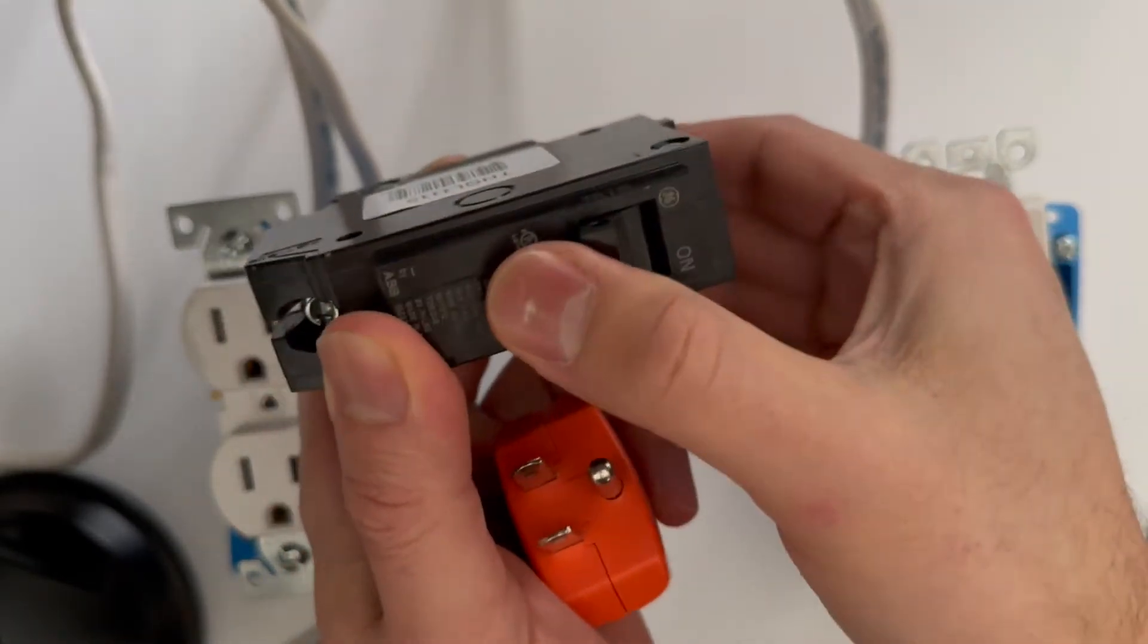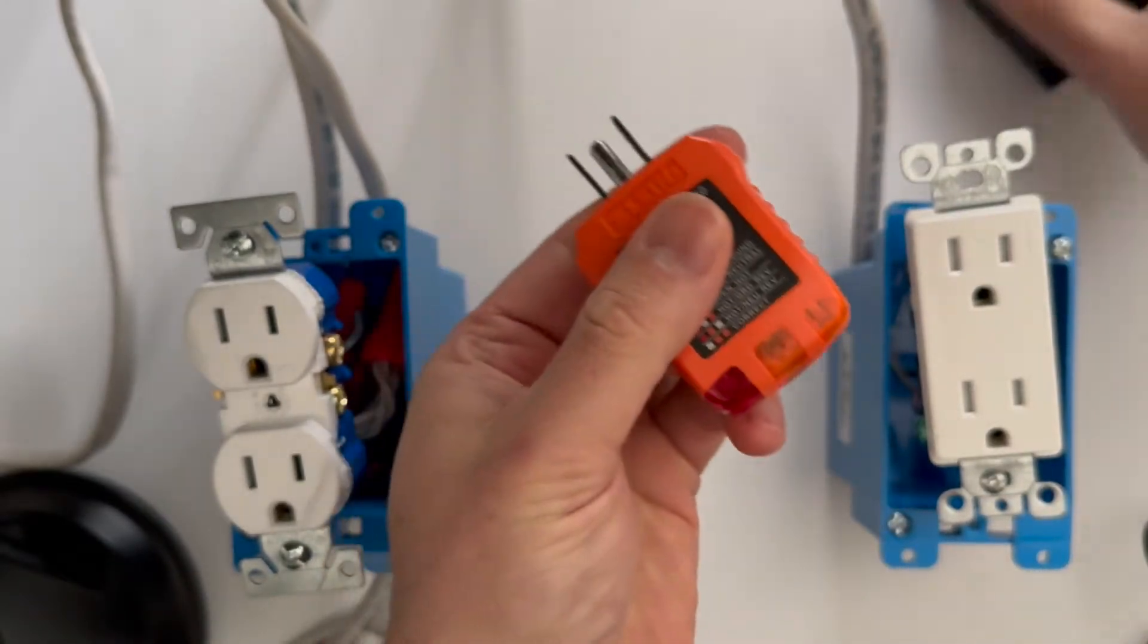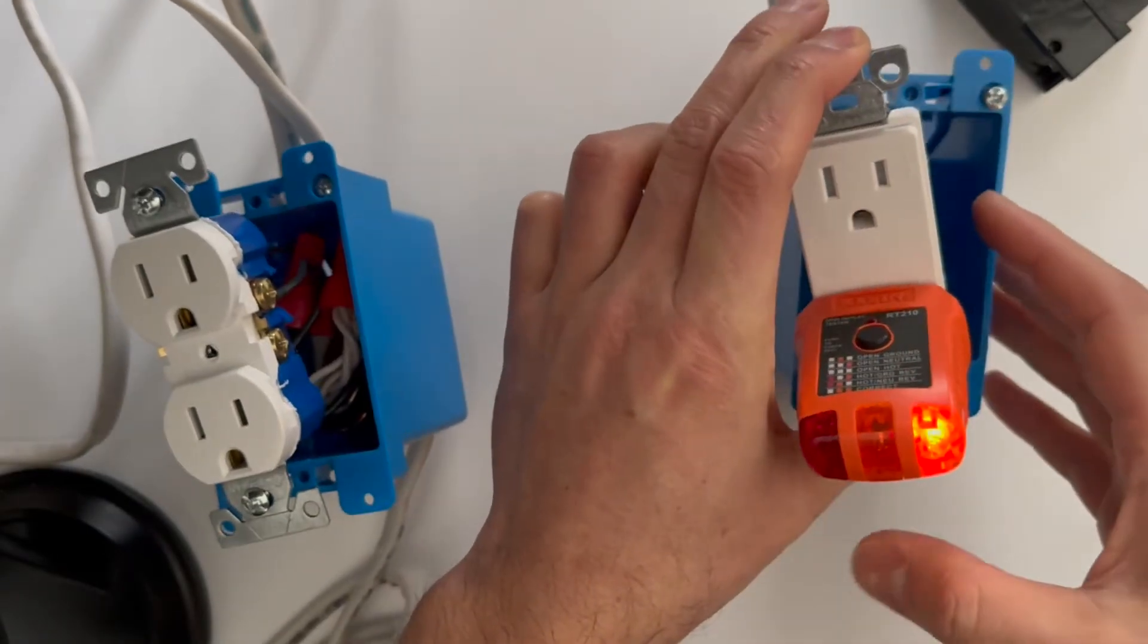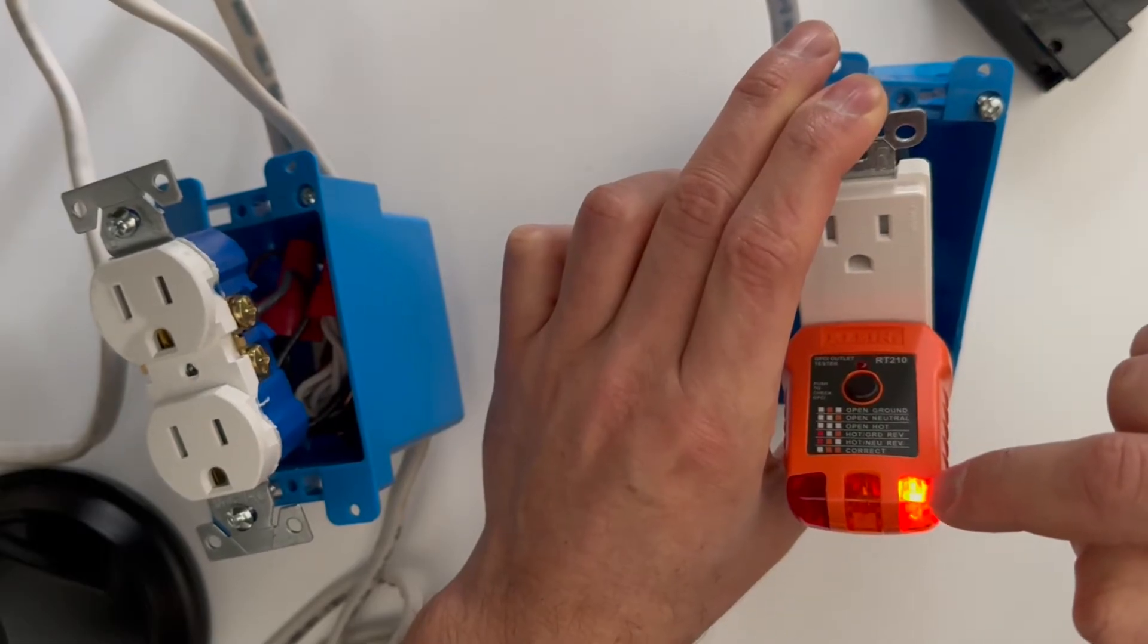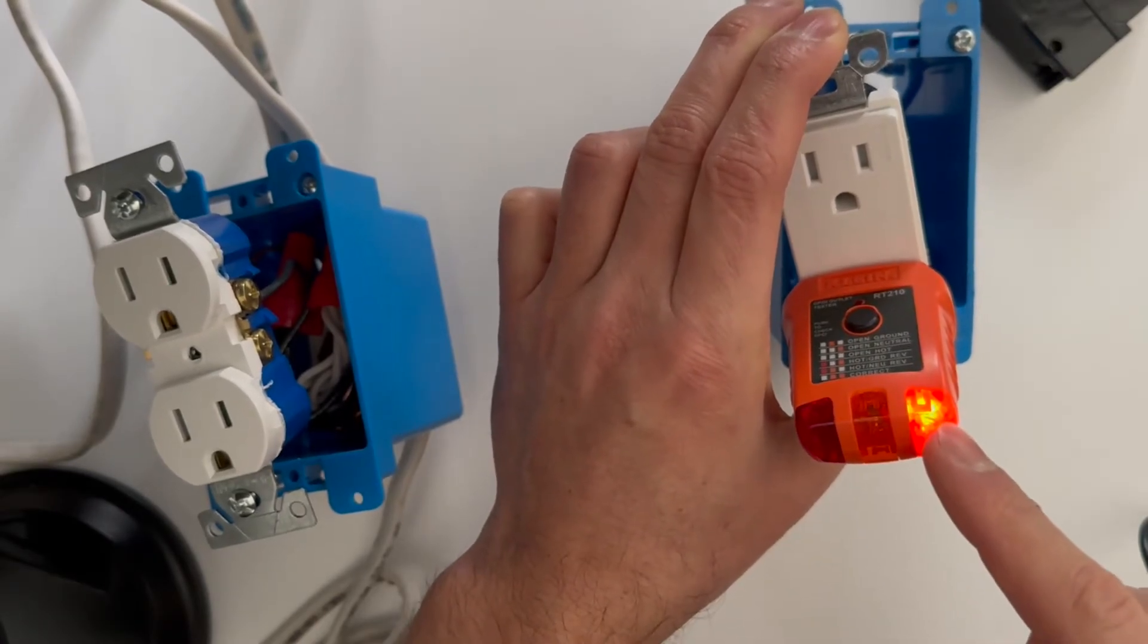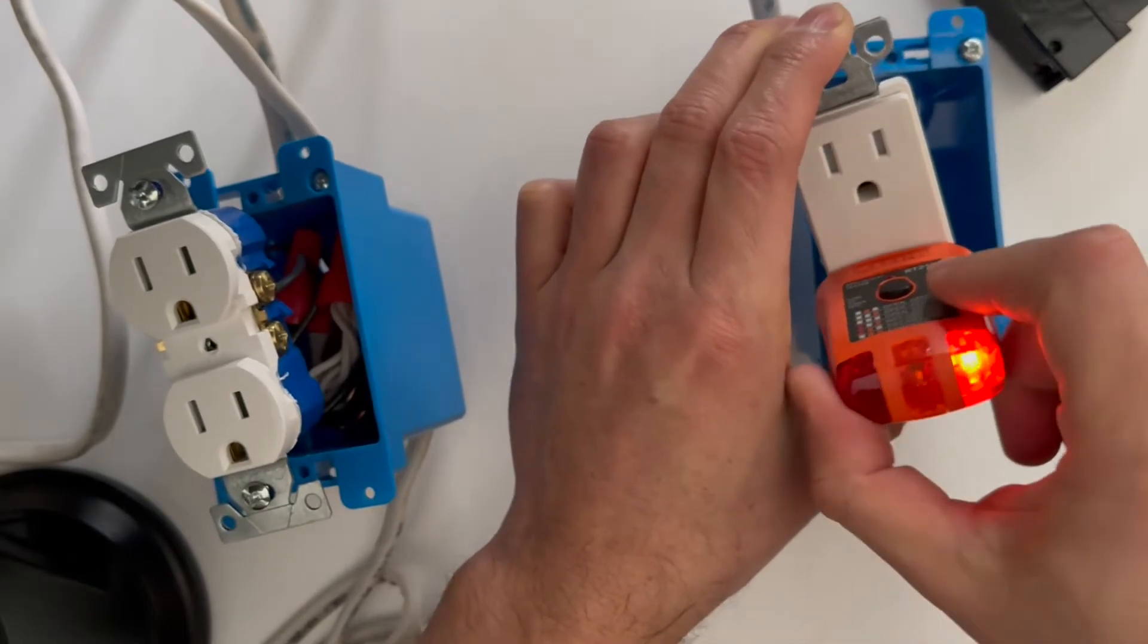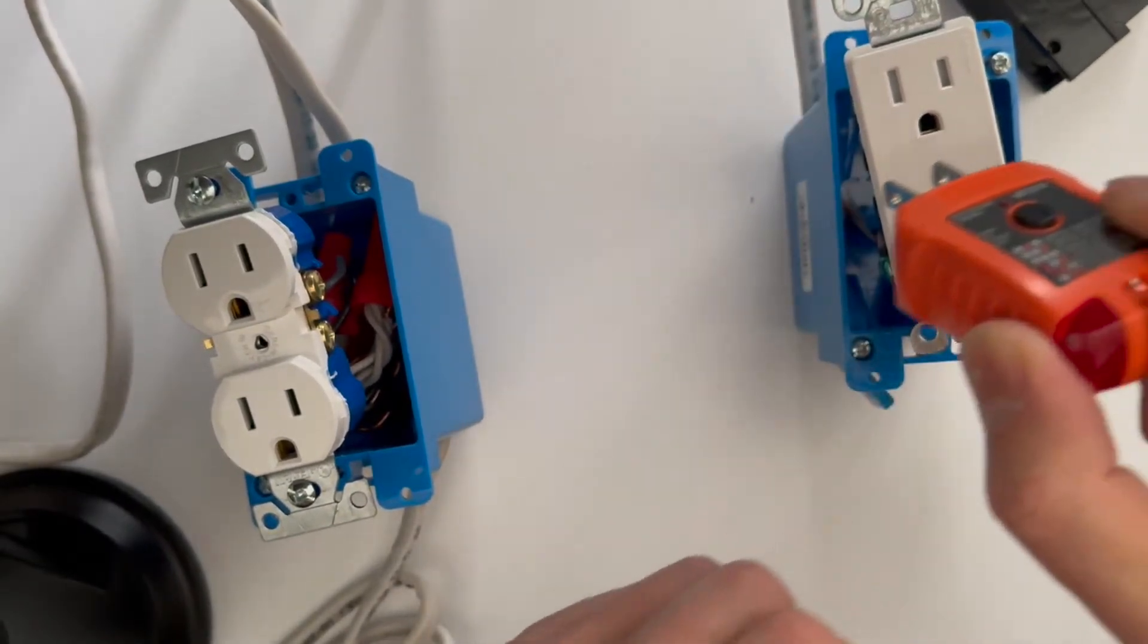When you plug in the outlet power tester like this, it's going to show open neutral with one light on, or the red light is on and this one is on, which means you don't have 120 volts in this circuit but half of the circuit is working.